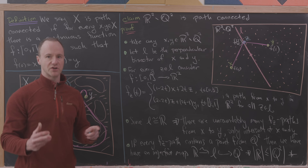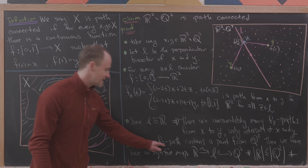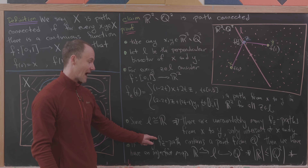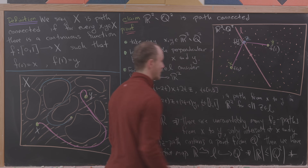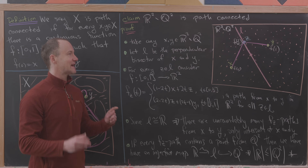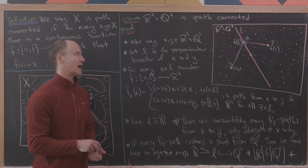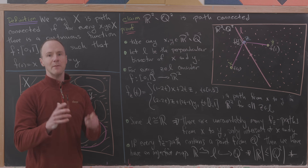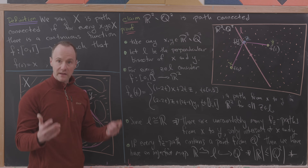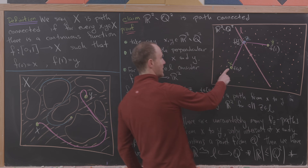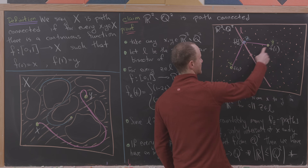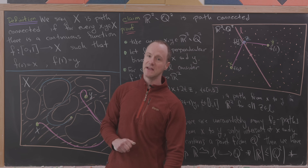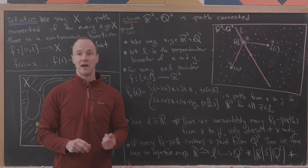That contradiction means it's false that every F_Z path contains a point from Q². In other words, there exists an F_Z path that does not contain any point from Q². If it doesn't contain any point from Q², then it lies completely in R² minus Q². That gives us a path completely contained in R² minus Q² from any point to any other point — which is exactly what we need for this space to be path connected. And that's a good place to stop.